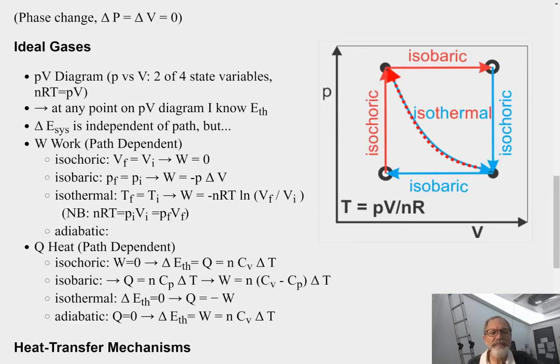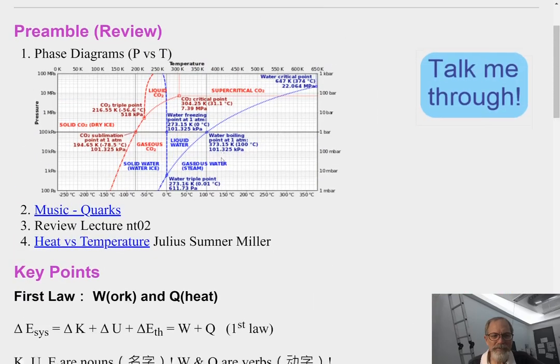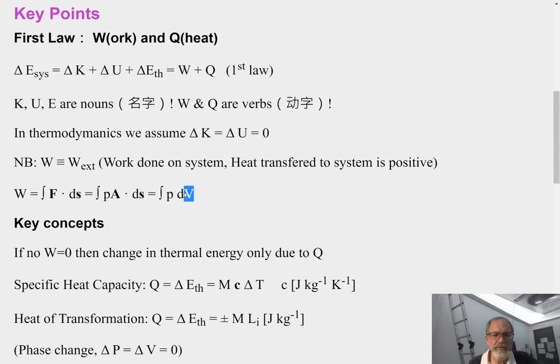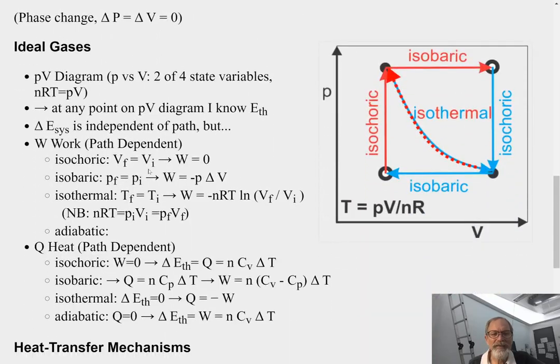So let's look at some specific paths. First of all, isochoric. We talked earlier before. That's where the volume does not change. In other words, we keep the same volume. Now, if volume does not change, then obviously, from this equation, no change in volume, it means work must be zero. So, there's no work done in an isochoric process.